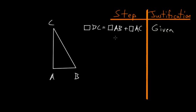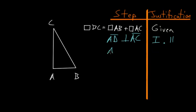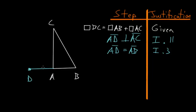To prove this, let's start by constructing a line AD that is perpendicular to line AC — we can do this because of Book 1, Proposition 11. Let's also make AD equal to AB, which we can do because of Book 1, Proposition 3. So let's draw that line and label this point D.